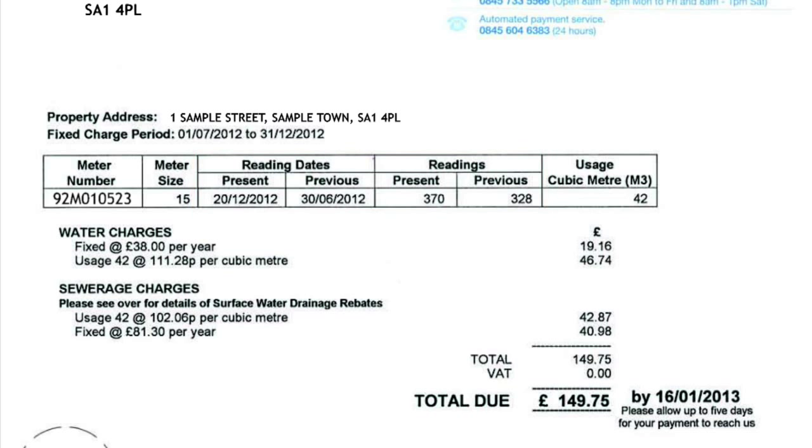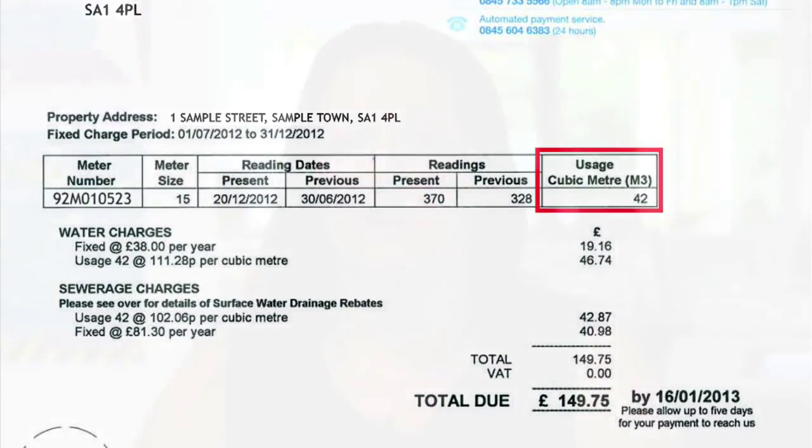We will try to read your meter each time. The usage is calculated in cubic meters. One cubic meter is the same as a thousand liters or just under 220 gallons of water. This is the same amount as about 24 baths full of water. If you don't have a meter you won't see this information.